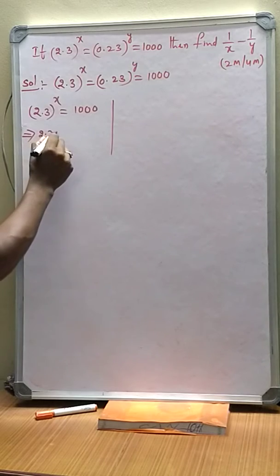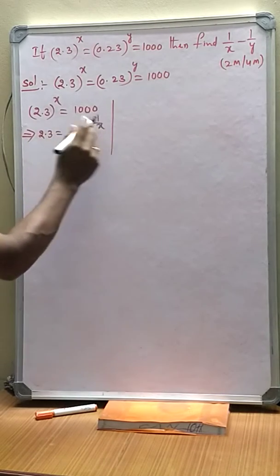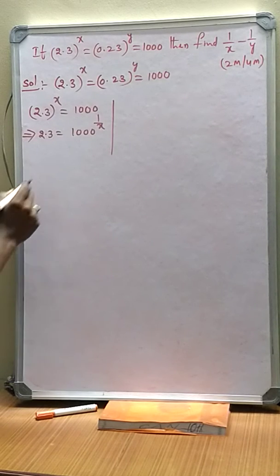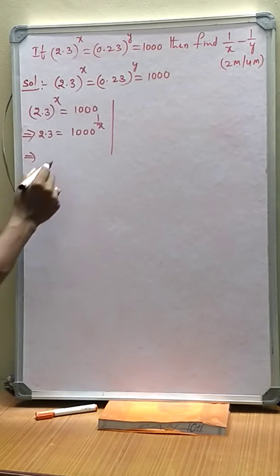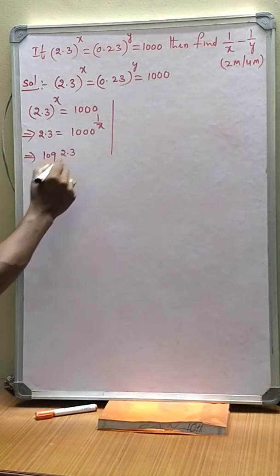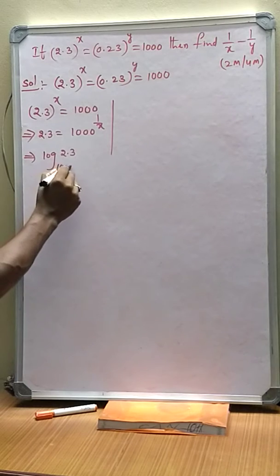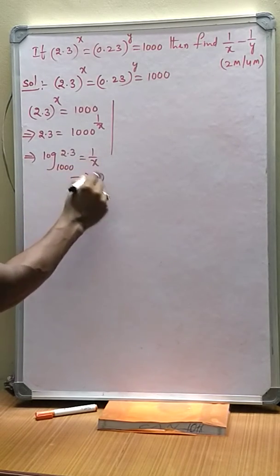Then it becomes 2.3 equals 10 to the power of 1 by x. Power x becomes x the root. Then write in logarithmic form: log 2.3 base 1000 equals 1 by x. Let it be equation 1.